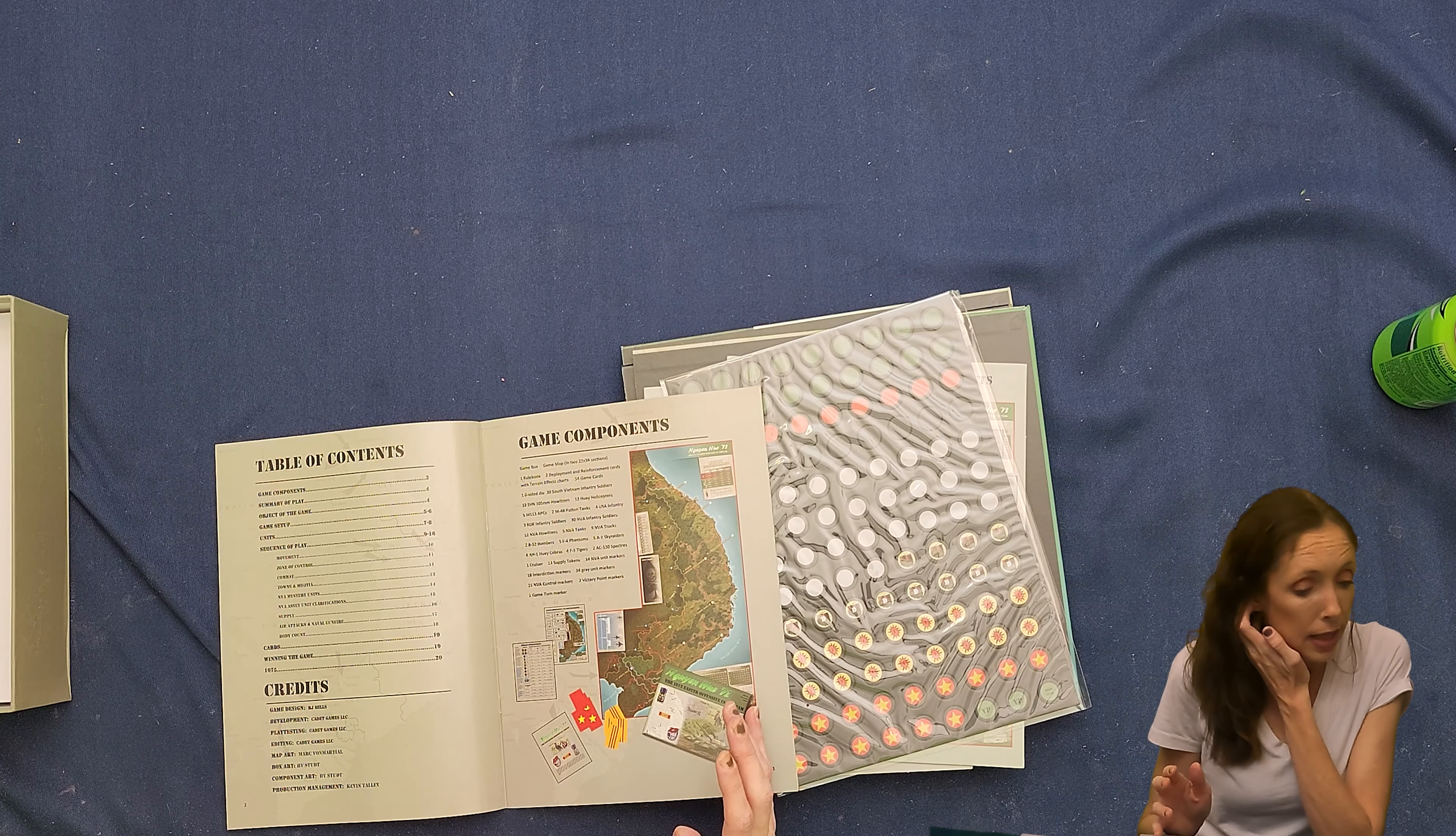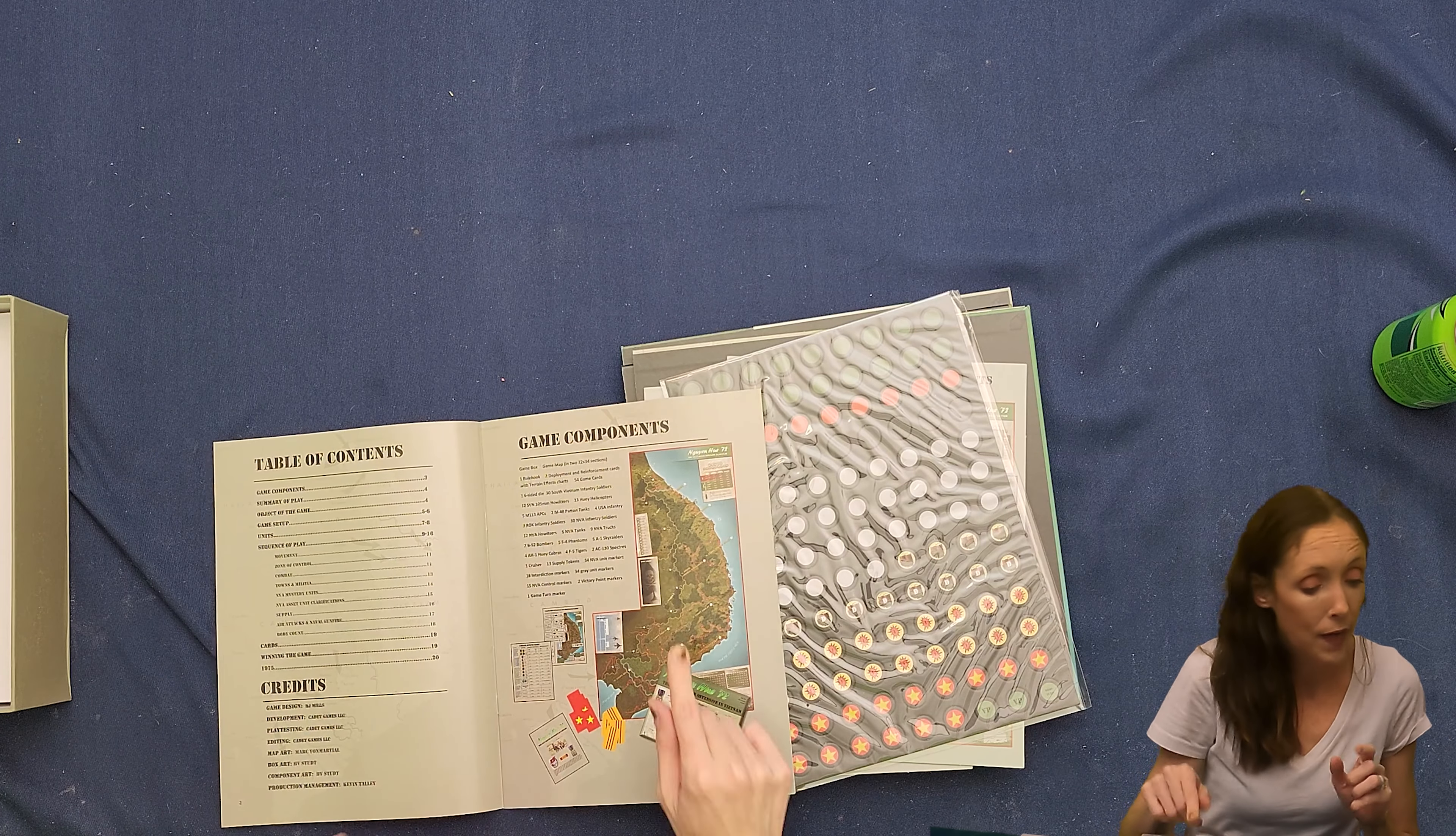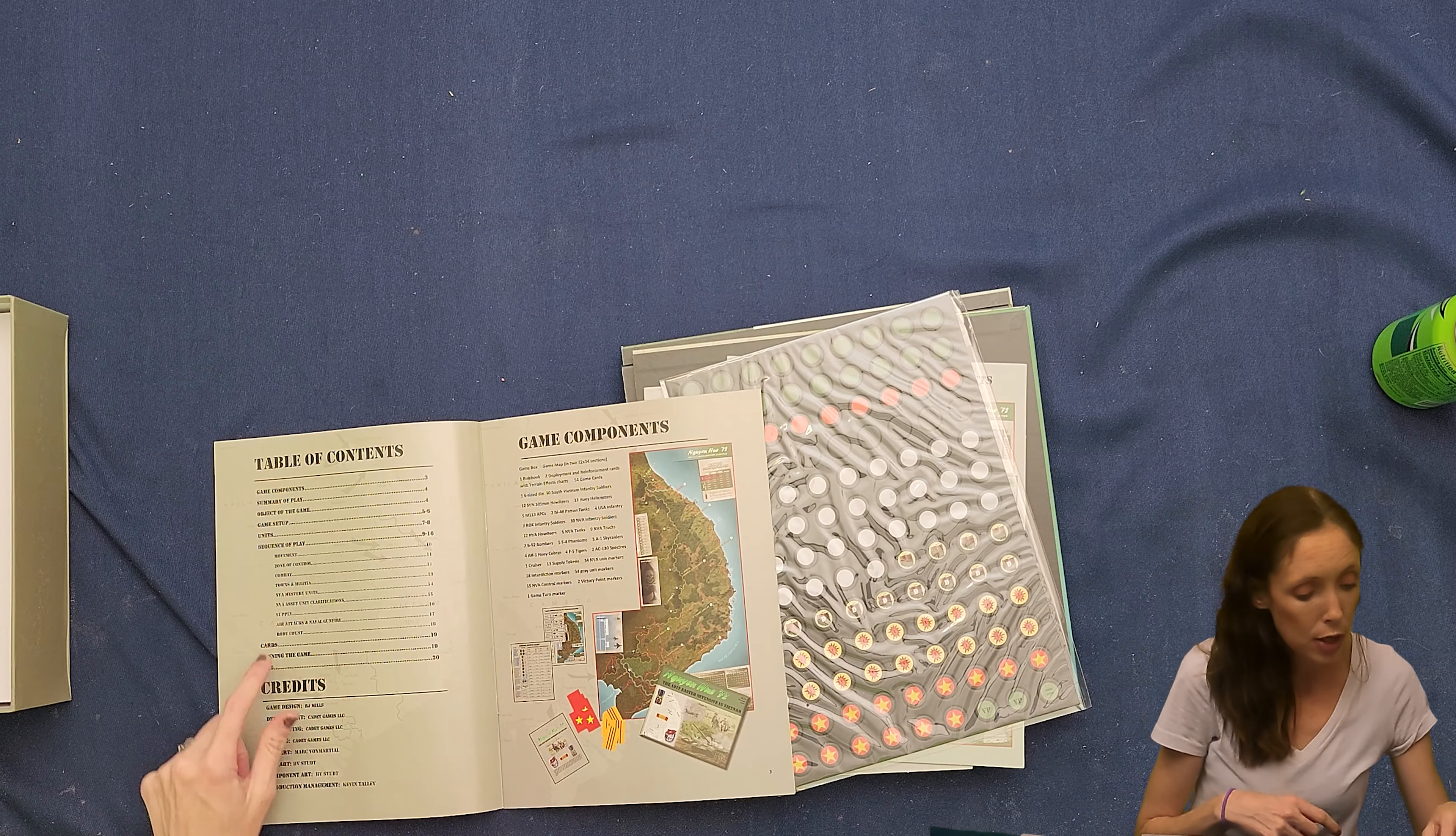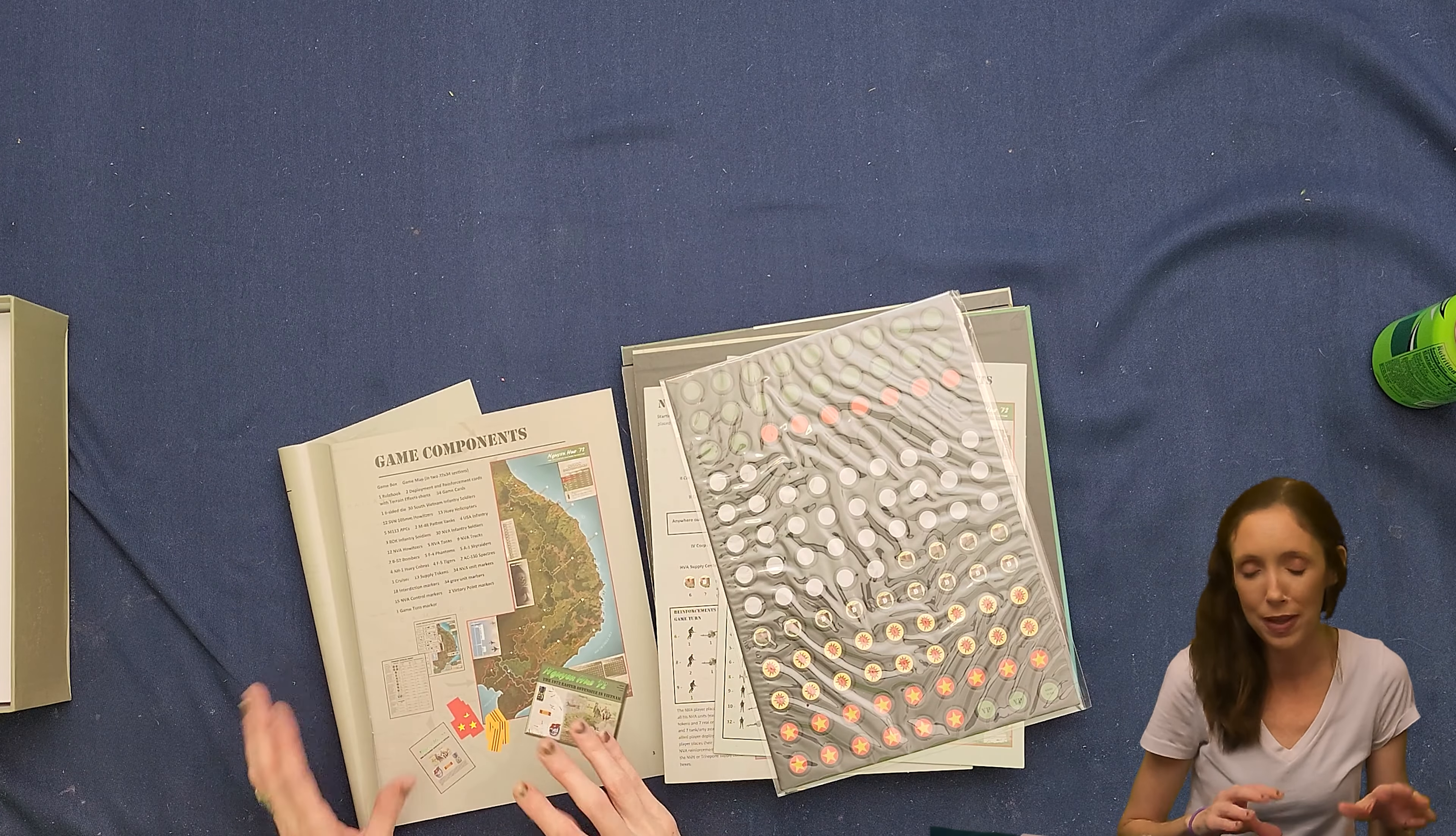This does look like the rule book. It says there's a table of contents and we have game components. So it does tell me that I'll read you that in a second. We have a summary of play, the object of the game, game setup, units, sequence of play cards, winning the game in 1975. I love it when a game includes exact step by step how to win the game. That's too cool.